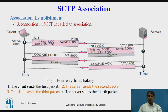SCTP Association Establishment is shown in this figure. The first step is the client sends the first packet which contains an init chunk. The verification tag of this packet is zero because no verification tag has yet been defined for this direction from client to server. The init tag includes an association tag to be used for packets from the other direction, server to client. The chunk also defines the initial TSN for this direction and advertises a value for receiver window. Note that no other chunks can be sent with the first packet.